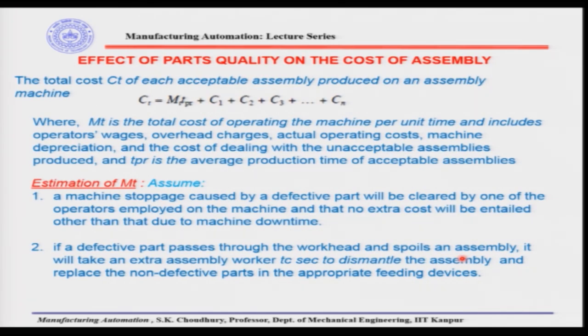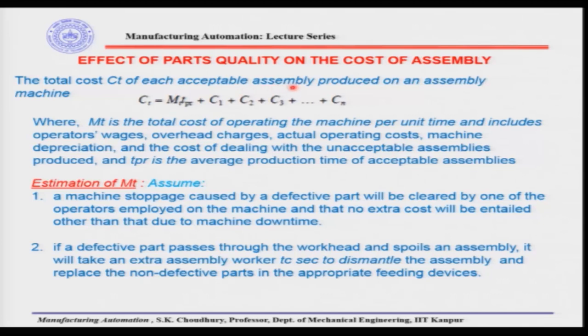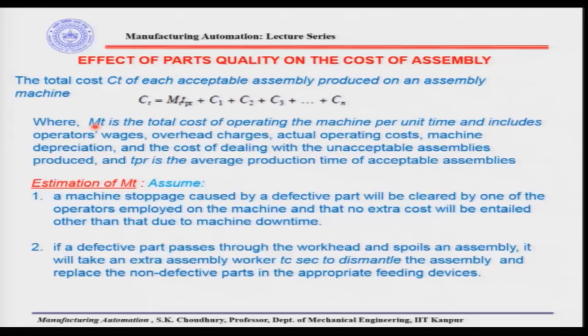Effect of part quality on the cost of assembly. The total cost CT of each acceptable assembly produced on an assembly machine is given by: CT = m_t × TPR + C1 + C2 + C3 + ... + Cn, where m_t is the total cost of operating the machine per unit time. This includes operator wages, overhead charges, actual operating cost, and machine depreciation — everything is included in m_t — plus the cost of each individual component part.